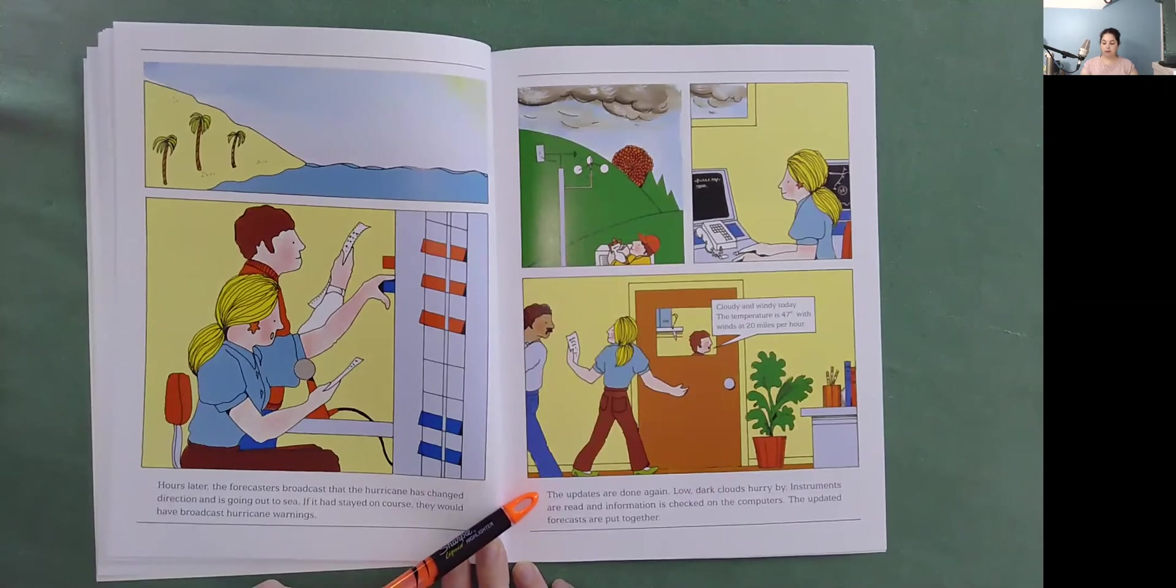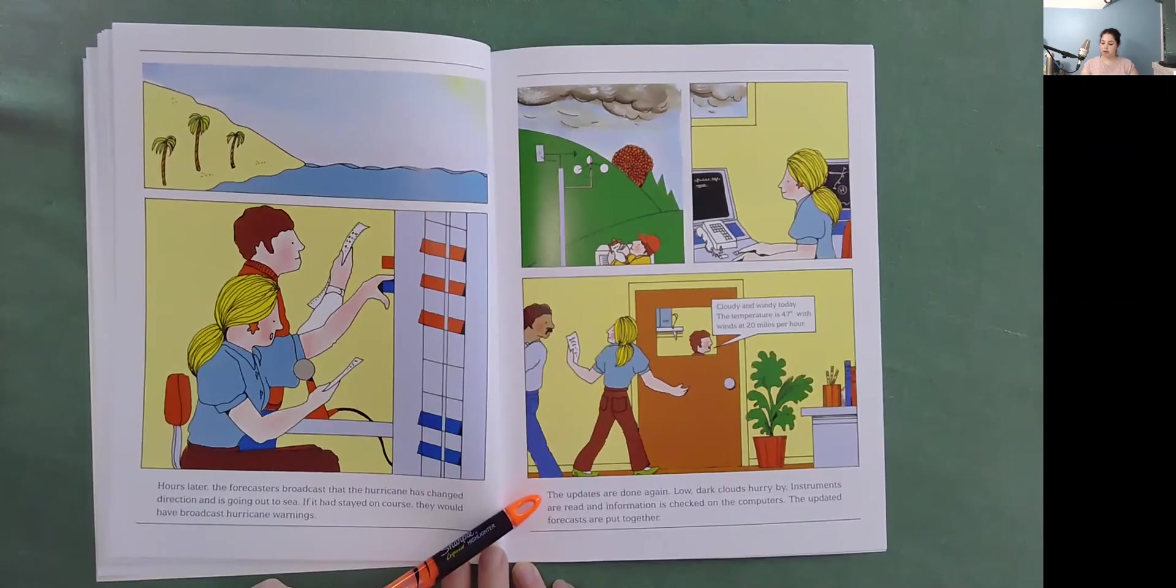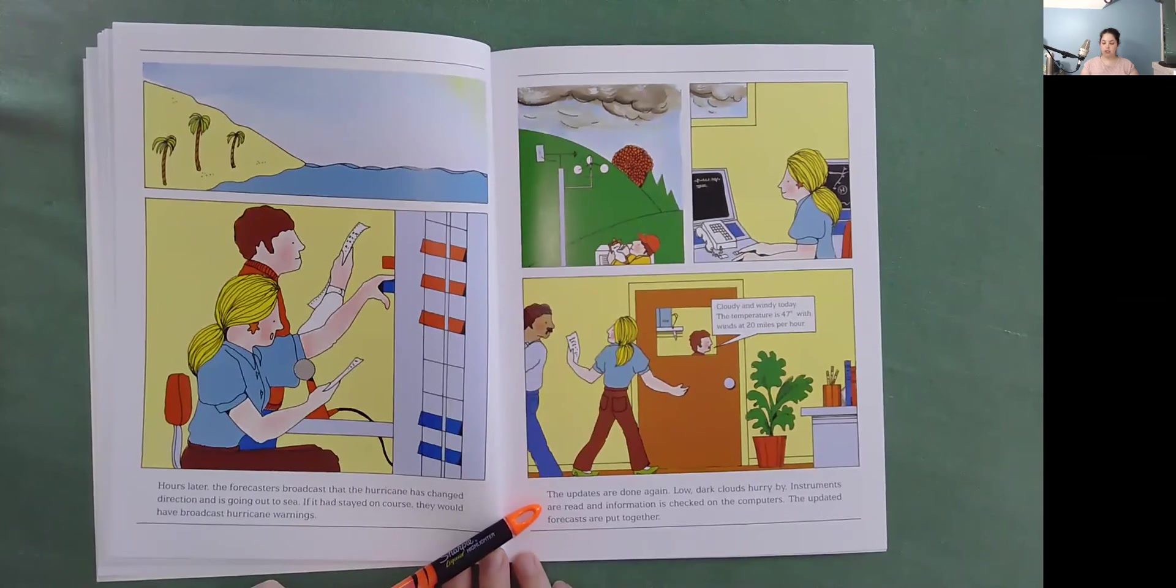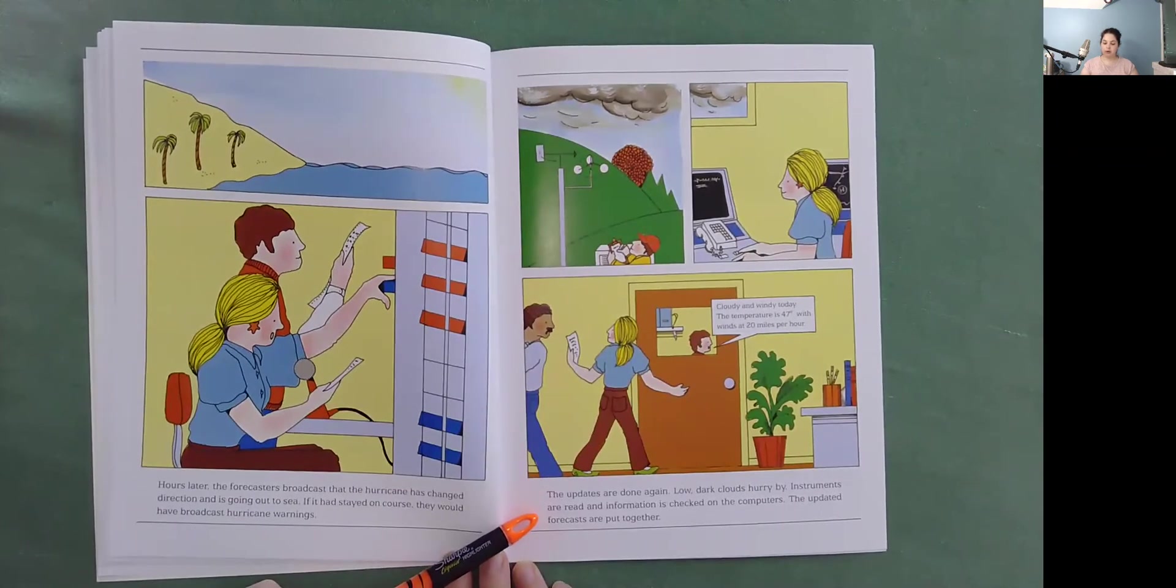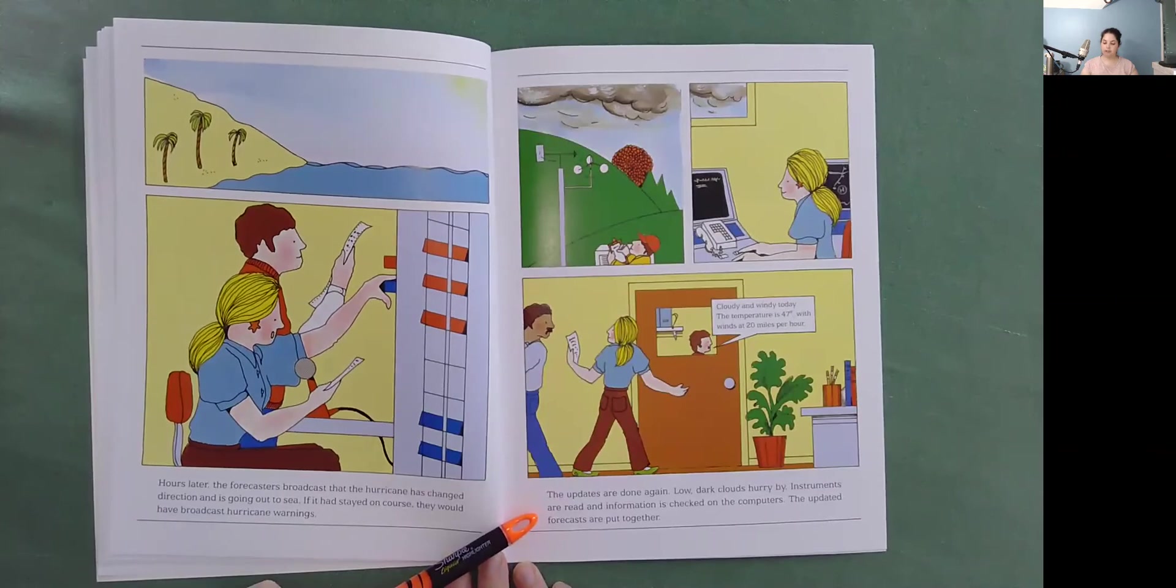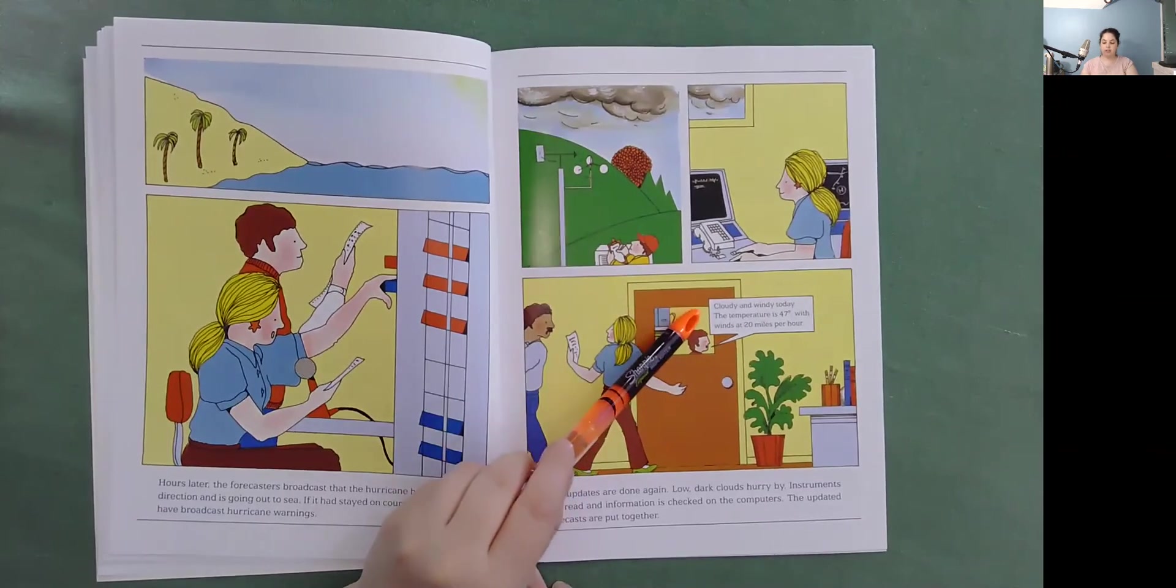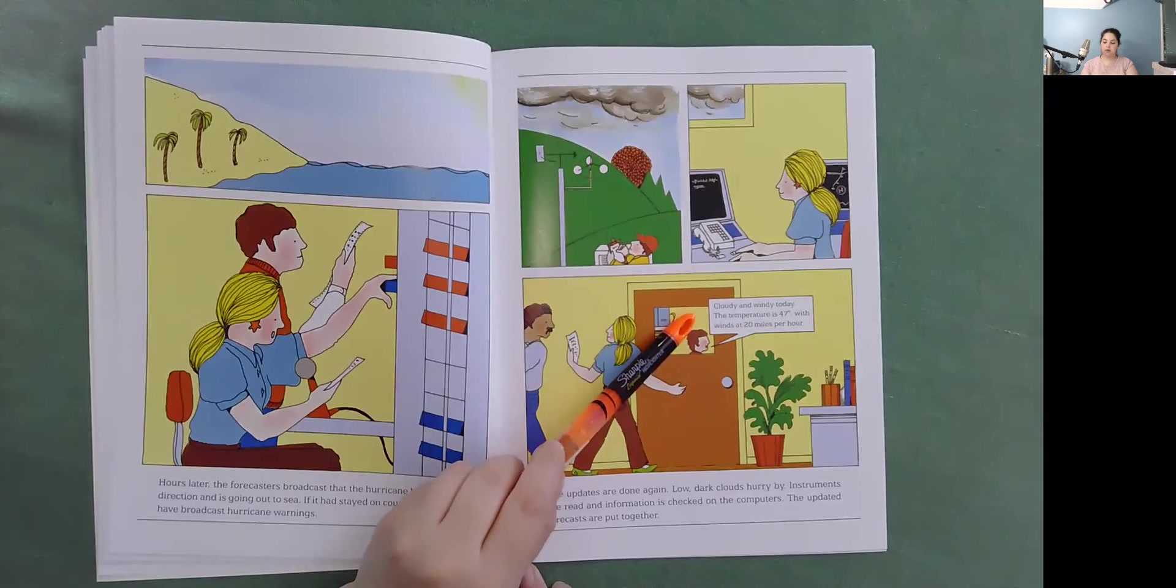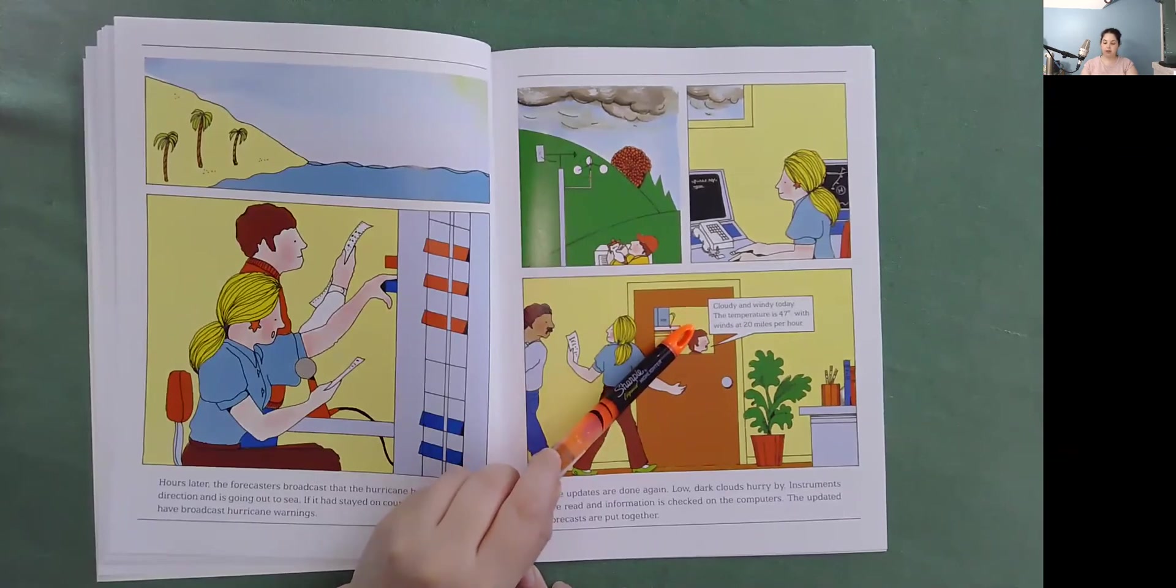The updates are done again. Low, dark clouds hurry by. Instruments are read and information is checked on the computers. The updated forecasts are put together. Cloudy and windy today. The temperature is 47 degrees with winds at 20 miles per hour.